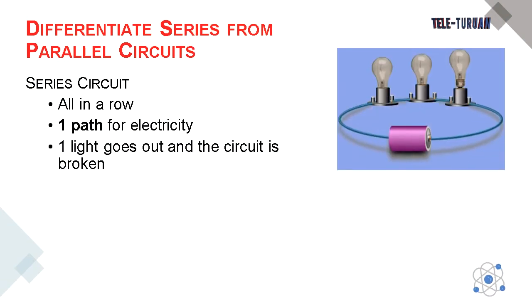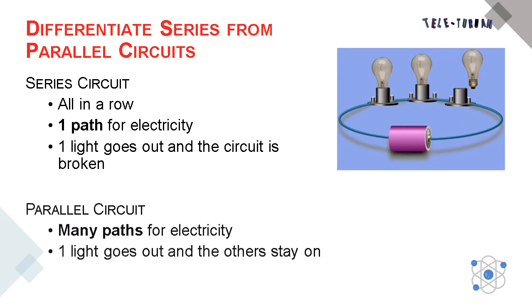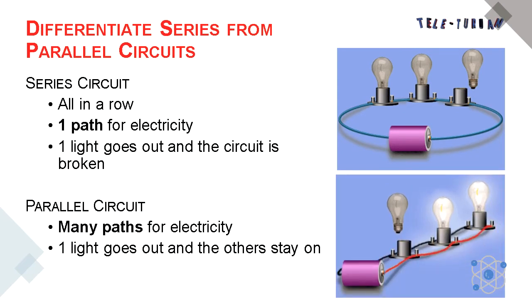Series circuit: all in a row, one path for electricity. One light goes out and the circuit is broken. Parallel circuit: many paths for electricity. One light goes out and the others stay on. Which is better?